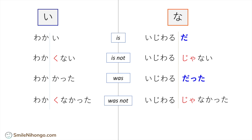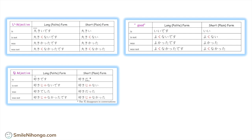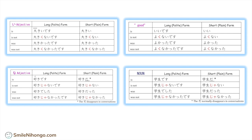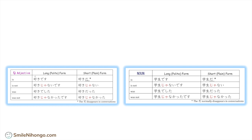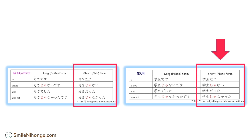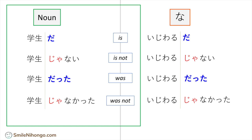Now we have completed the plain form conjugation for both groups — i-adjectives and na-adjectives. Let's quickly cover one more category: the plain form for nominal sentences, which is a combination of a noun and です, such as 日本人です or 学生です. Good news — this conjugates exactly the same as na-adjectives. In the example of 学生です, it conjugates like this: 学生だ、学生じゃない、学生だった、学生じゃなかった.